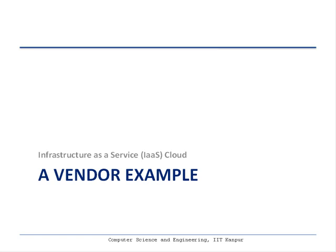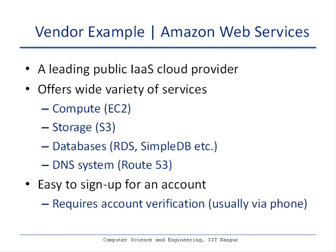In this lecture, we are going to look at an example of infrastructure as a service cloud. Amazon Web Services is one example that we indicated in one of our previous lectures. It is a leading provider of infrastructure as a service cloud, where several fundamental computing resources, such as compute, storage, and database services, are offered as a service which can be remotely accessed and used by the cloud consumers.